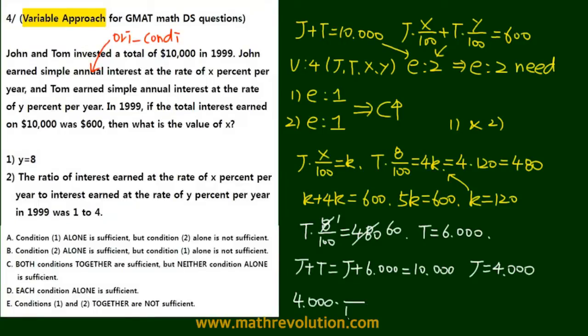What do you get when you put that in? We have 4,000 times x over 100 equal to k, which is 120, and these cancel out the two zeros. x is therefore equal to 3, and it's sufficient.